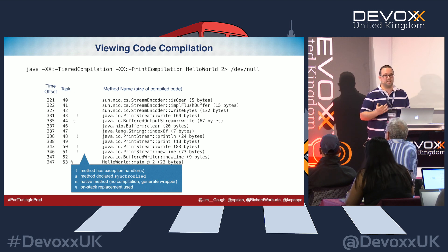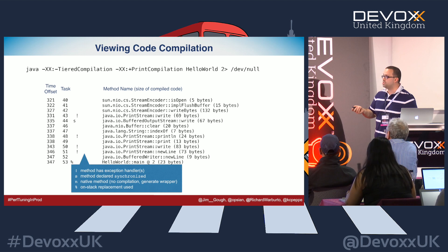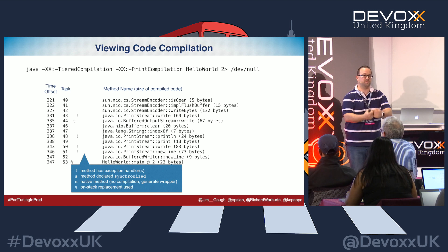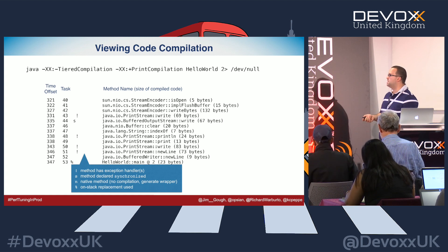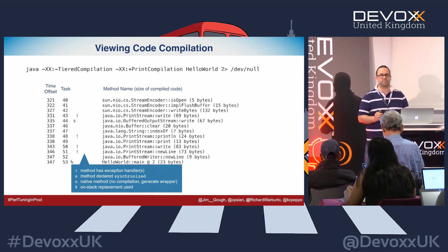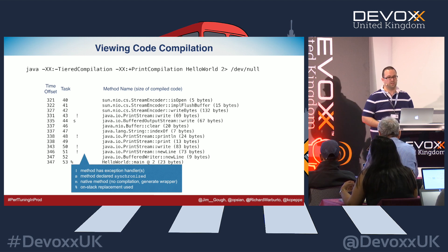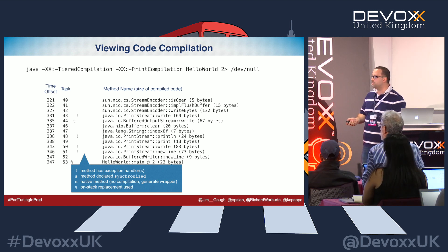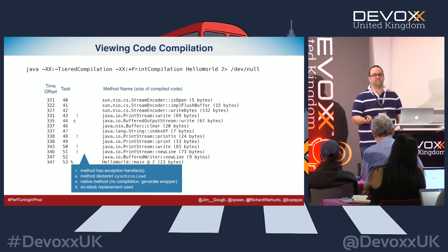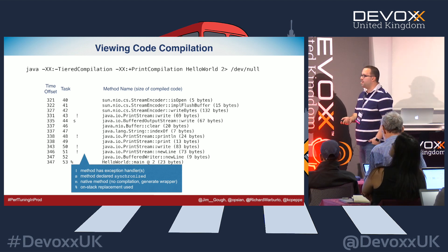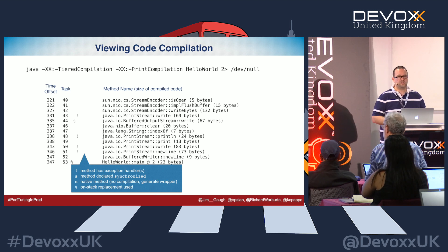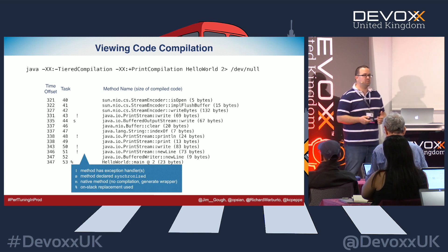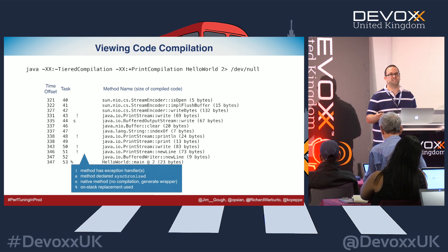Using the print-compilation flag, you start to see different things: the task number refers to where it is on the compilation queue. You submit a task saying 'compile this'; it runs on a separate thread inside the JVM and emits machine instructions. Things with exception handlers or synchronized declarations need to be tracked slightly differently during compilation. Some entries are native method wrappers — for parts of the JVM where it's more efficient to have a native implementation, like mathematical functions, the compilation just wraps that native method.